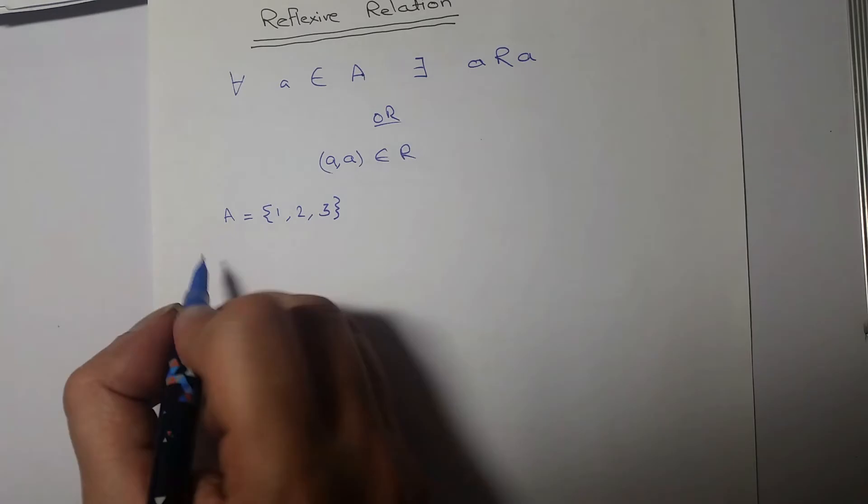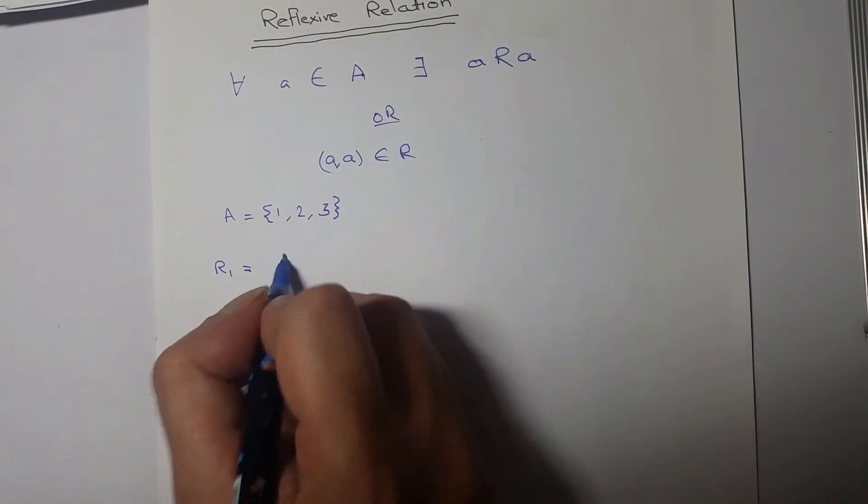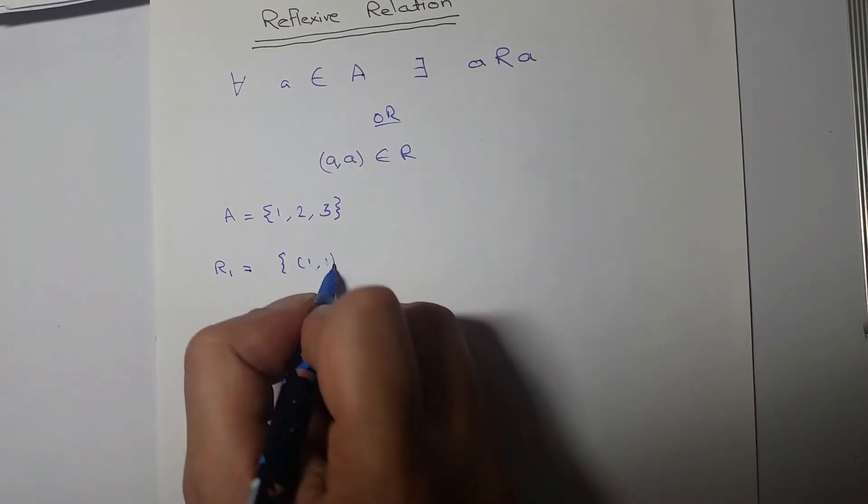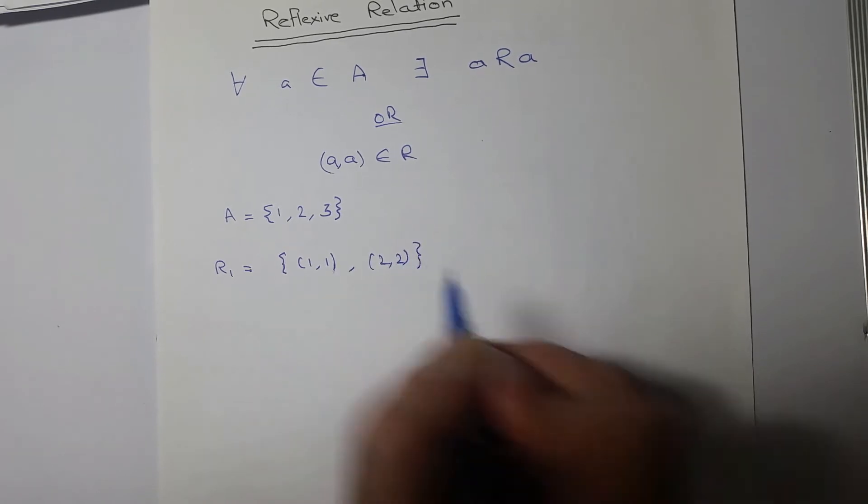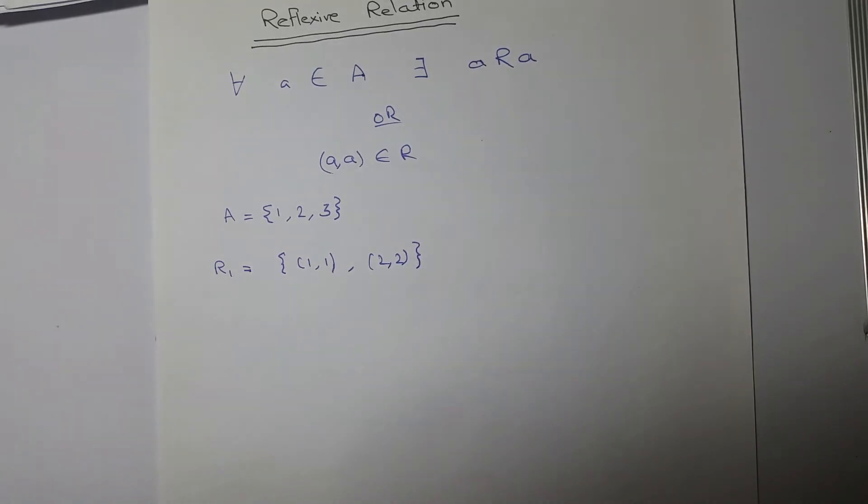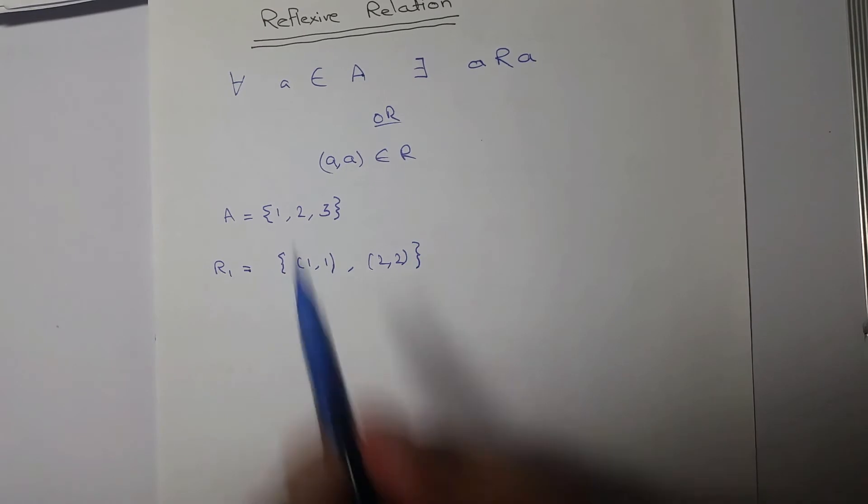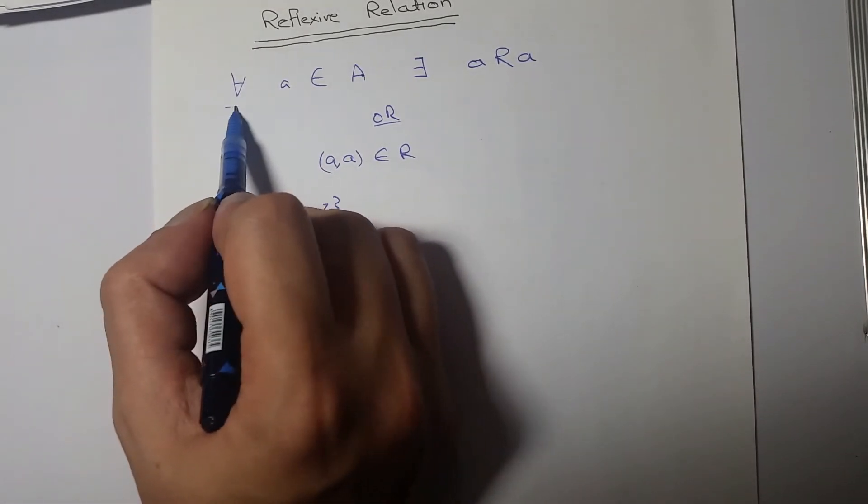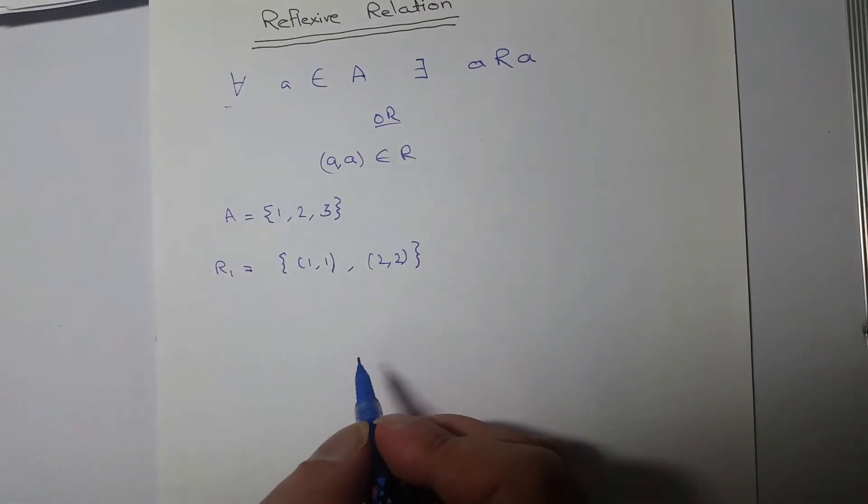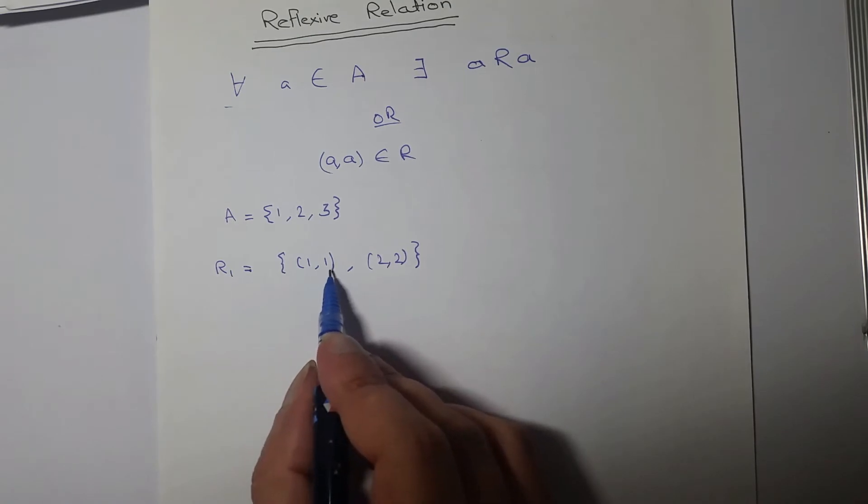R1 is {(1,1), (2,2)}. Now this is not reflexive since I said that every element must be related to itself. So 1 has image 1, 2 has image 2, but 3 does not have image 3. So this is not a reflexive relation.